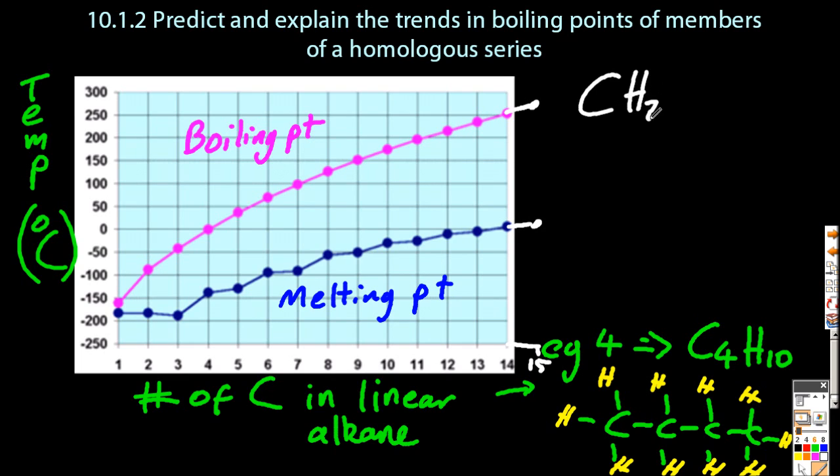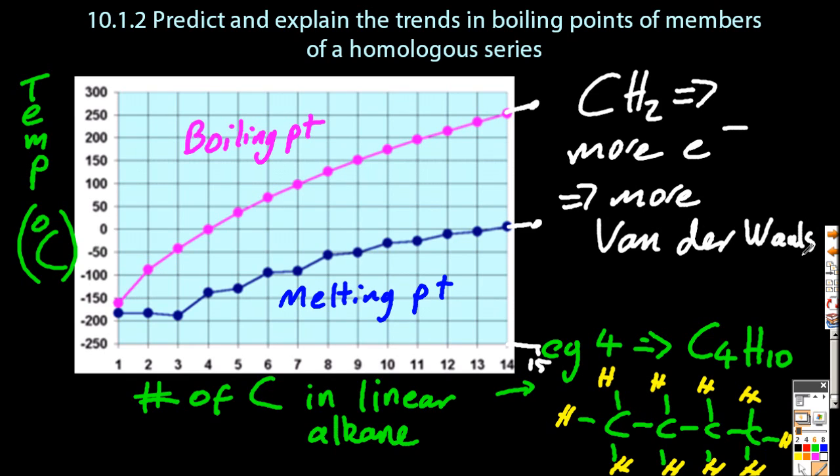Now the reason there's this nice pattern is that every time we go one more down a homologous series, you add a CH2 unit every time. And that means there's more electrons. And more electrons means more van der Waals, which is the same as London dispersion forces. So I'm increasing the intermolecular force each time. Therefore, the boiling and melting points will increase.